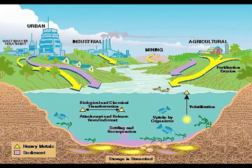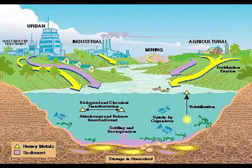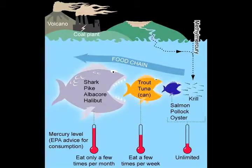Mercury in the air eventually settles into water or onto land where it can be washed into the water. Once deposited, certain microorganisms can change it into methylmercury, a highly toxic form that builds up in the fish and wildlife and humans who eat the fish. As you can see in this picture, mercury increases in concentration as it moves up the food chain.